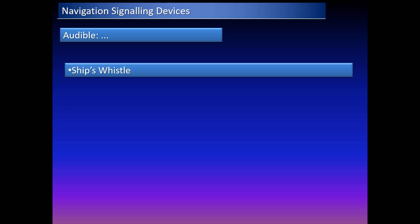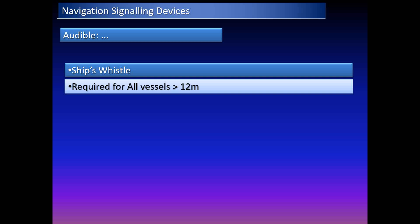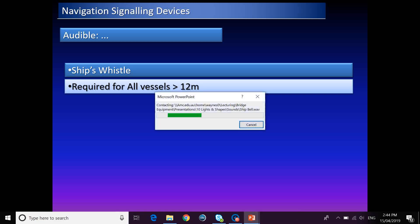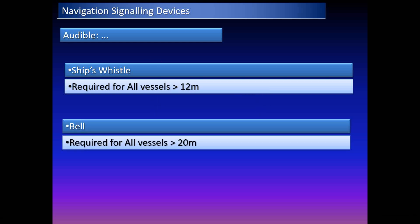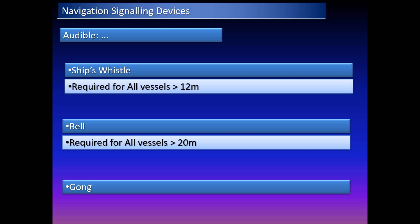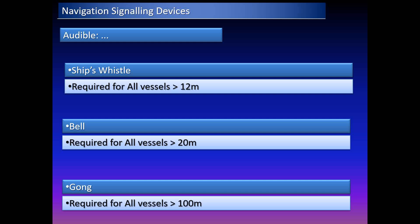For navigational sound signaling: the ship's whistle is required for all vessels greater than 12 meters; the bell is required for all vessels greater than 20 meters; the gong is required for all vessels greater than 100 meters. Vessels greater than 100 meters shall have all three — whistle, bell, and gong. A vessel less than 12 meters needs only a whistle; a vessel less than 20 meters needs a whistle and bell but not a gong.